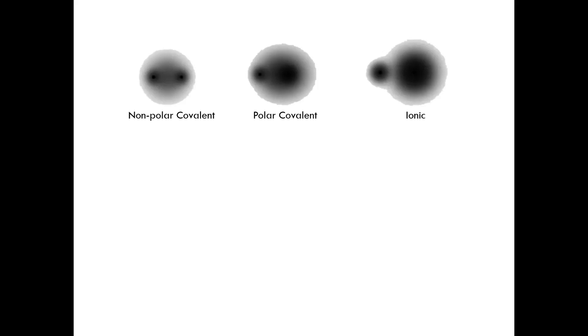The three images here are of electron clouds of three different types of bonds. The first cloud is of a non-polar covalent bond, the second a polar covalent bond, and the third an ionic bond. But what does it mean to say that a bond is polar? The word pole is derived from Latin to mean end. Just as we have two opposite ends to earth — the north pole and the south pole — a compound can also have two opposite ends. One end can be slightly positive and one end slightly negative. The slightly positive end is referred to as the positive pole, and the slightly negative, the negative pole. If a compound has two slightly charged ends, it's referred to as polar.